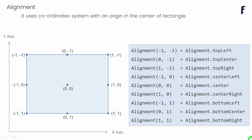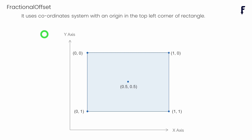Values for the alignment property can be passed using nine different constants available inside the alignment class. We can also pass an instance of alignment using specific coordinates, but before doing so make sure you understand how this alignment adjusts its coordinate system. I have already explained the alignment object in the alignment widget video, so make sure you watch that one. We can also pass the value for alignment using a FractionalOffset object, which is similar to alignment but has a different coordinate system starting from the top-left corner — also explained in the alignment widget video.